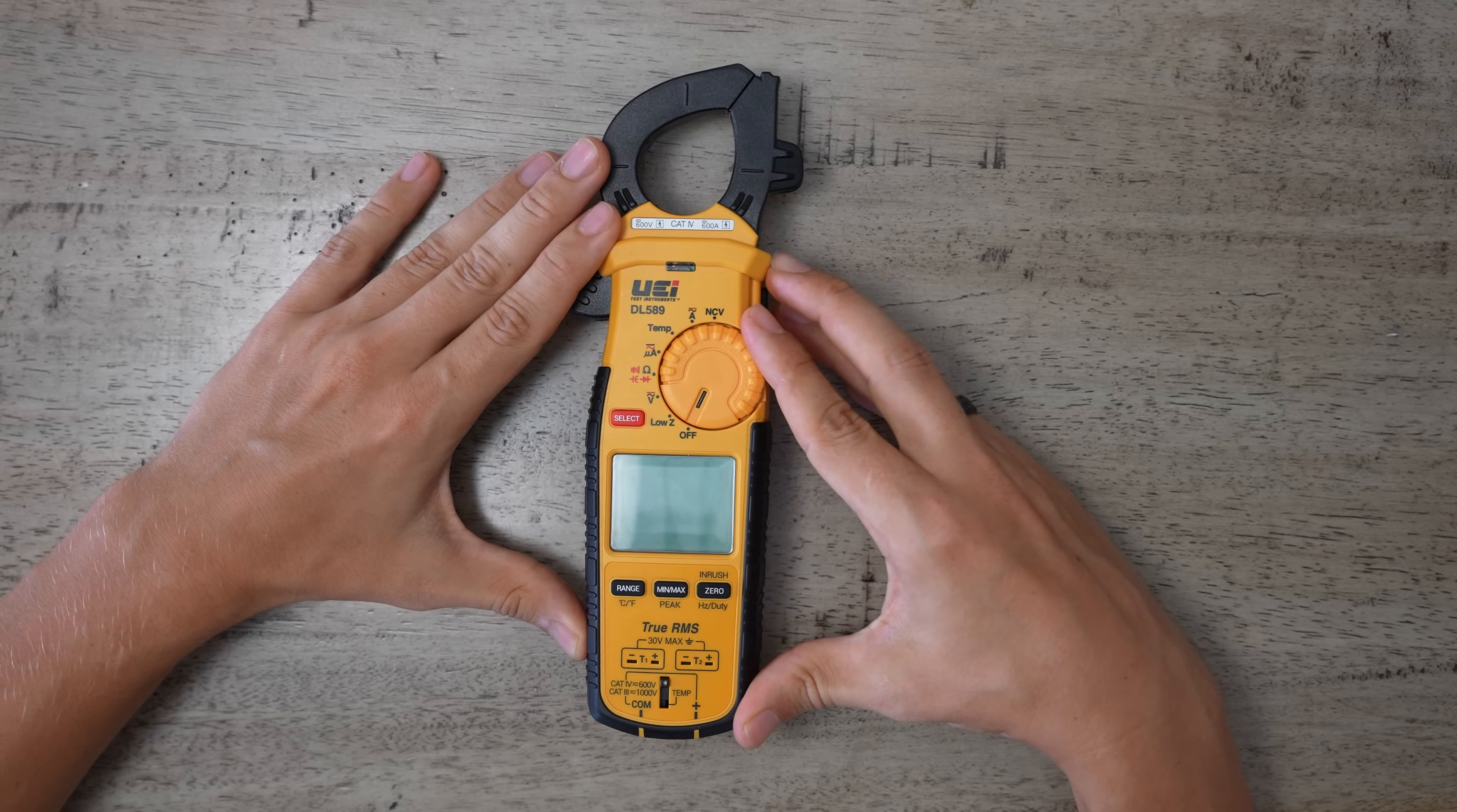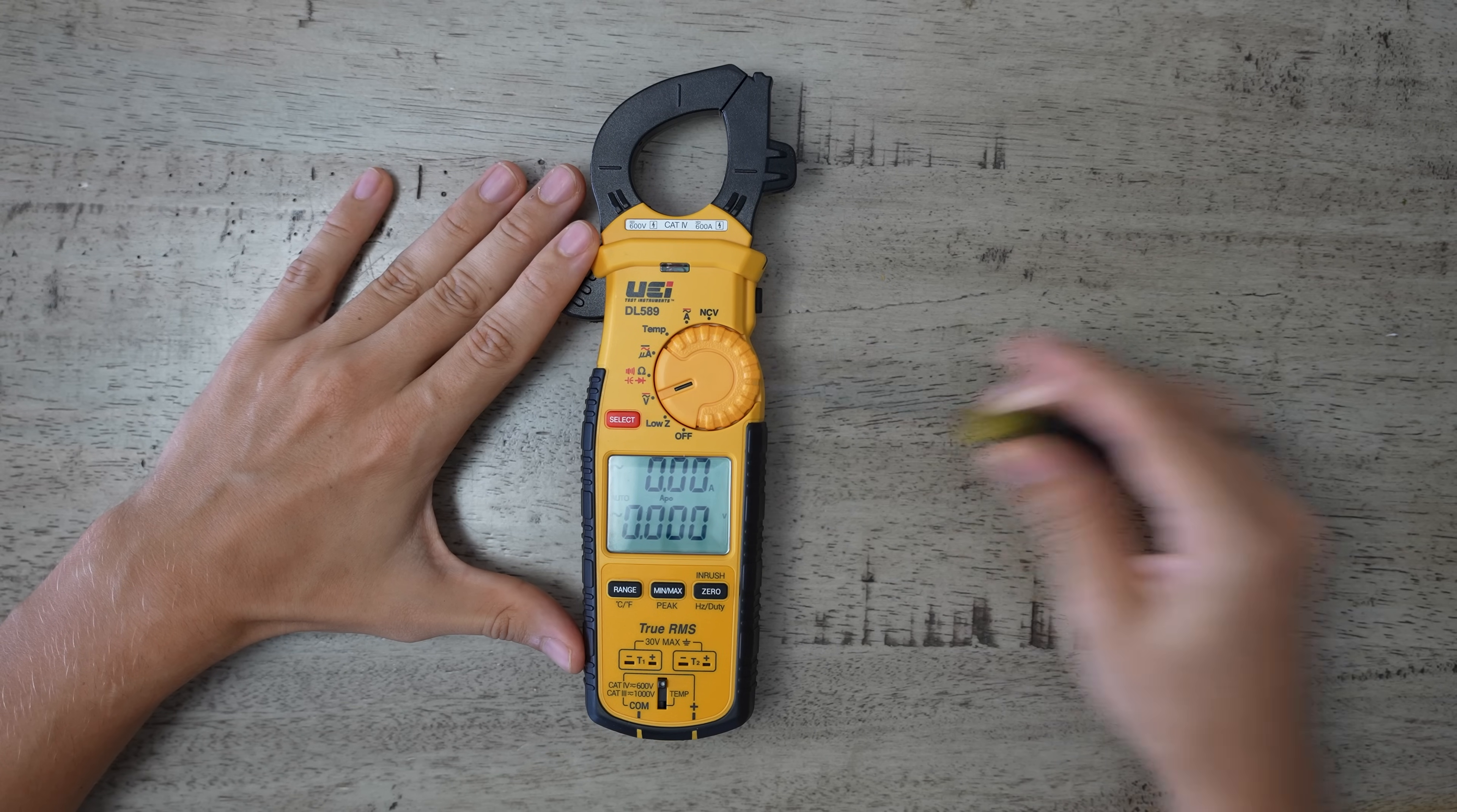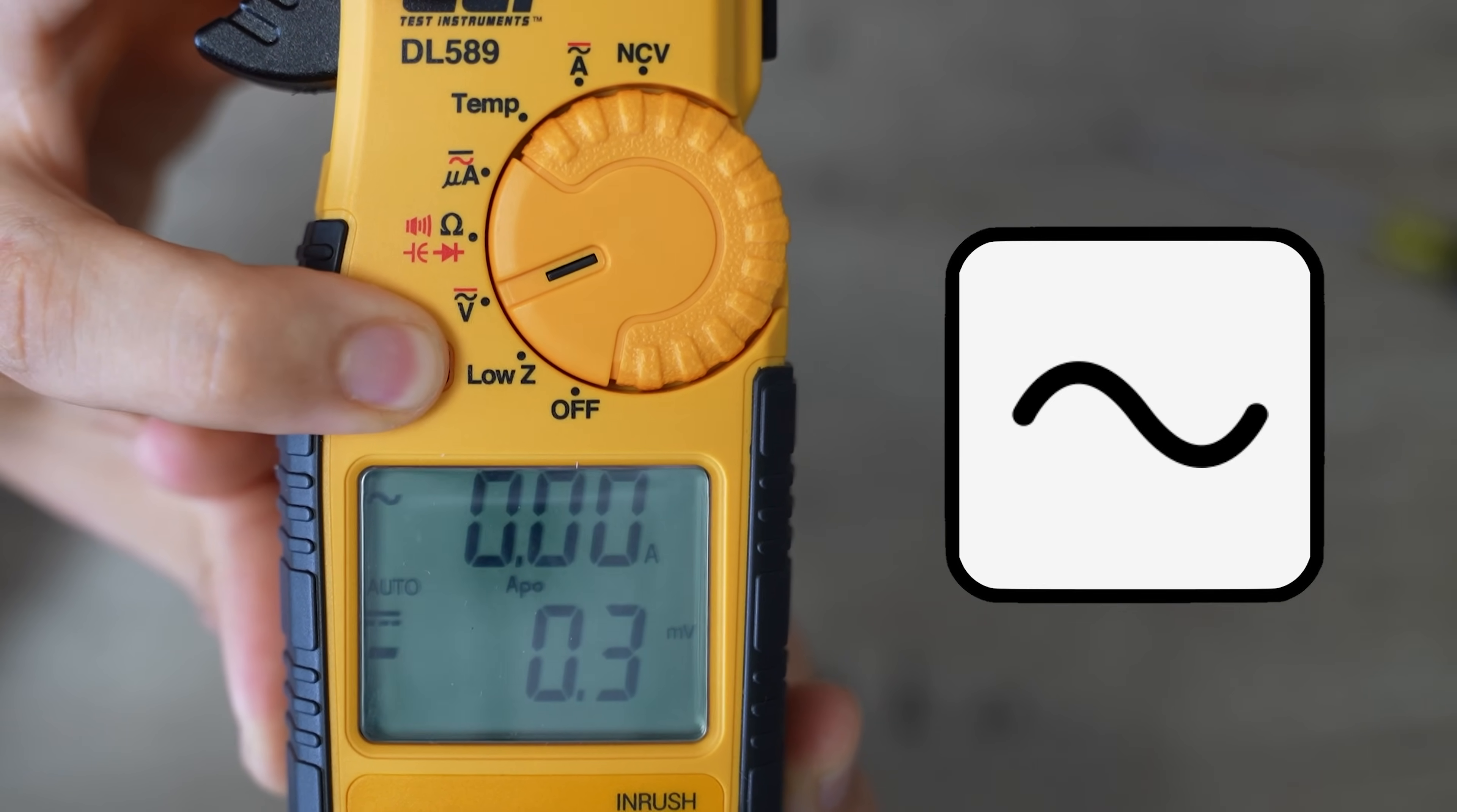To start things off, let's begin with voltage, which is represented by this letter V right over here. There's two types of voltages: direct current and alternating current. On some meters, they're going to be separated, but on this meter, they're both under one selection. To change between the two, I would press this select button, which brings me to direct current. This symbol right over here is one solid line and dashed lines right under it. If I press select again, it switches me back to alternating current, which is this wave symbol right here.